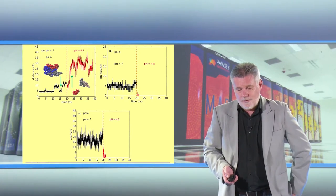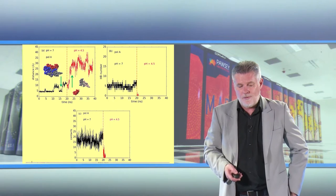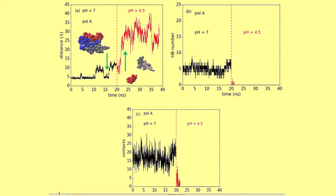We ran simulations and you see some profiles here showing that indeed, once you switch the pH — in the top left-hand corner that happens around 20 nanoseconds — it really blows apart. These are short, preliminary simulations, but once that carrier polymer turns positive it blows away from the lysozyme and looks very promising.